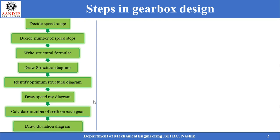The actual output speed of the gearbox might be different from the theoretical or desirable speed. This difference is called deviation, and it should be within the permissible limit. To check whether the deviation is within the permissible limit, a deviation diagram is drawn. If the deviation is more than acceptable, the designer has to go back to the penultimate step of calculating the number of teeth on the gearbox, making it a recursive process.